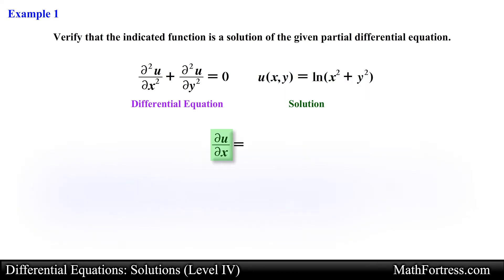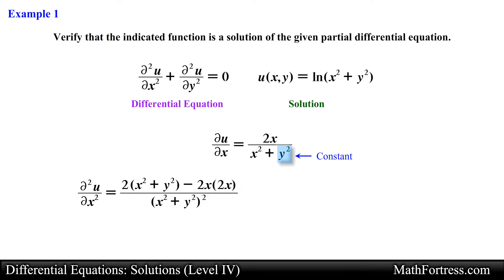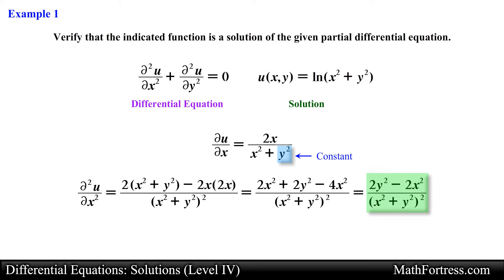To take the partial derivative of u with respect to x, we consider the variable y as a constant and apply the chain rule to find the partial derivative. Carrying out the partial derivative, we obtain the following expression. Next, we take the partial derivative of this expression with respect to x once more to obtain the second partial derivative of u with respect to x. Doing that, we obtain the following expression.